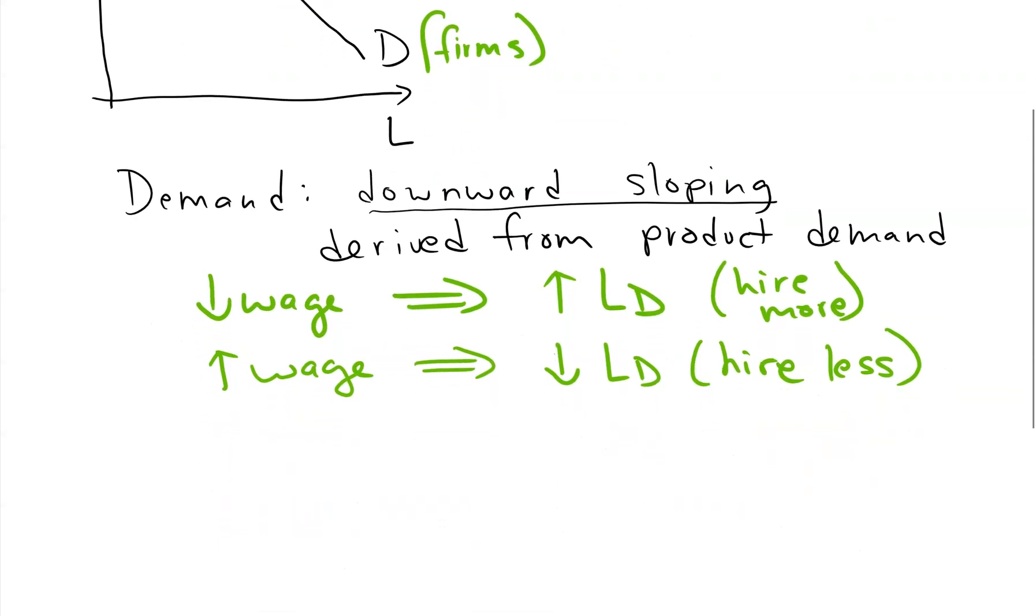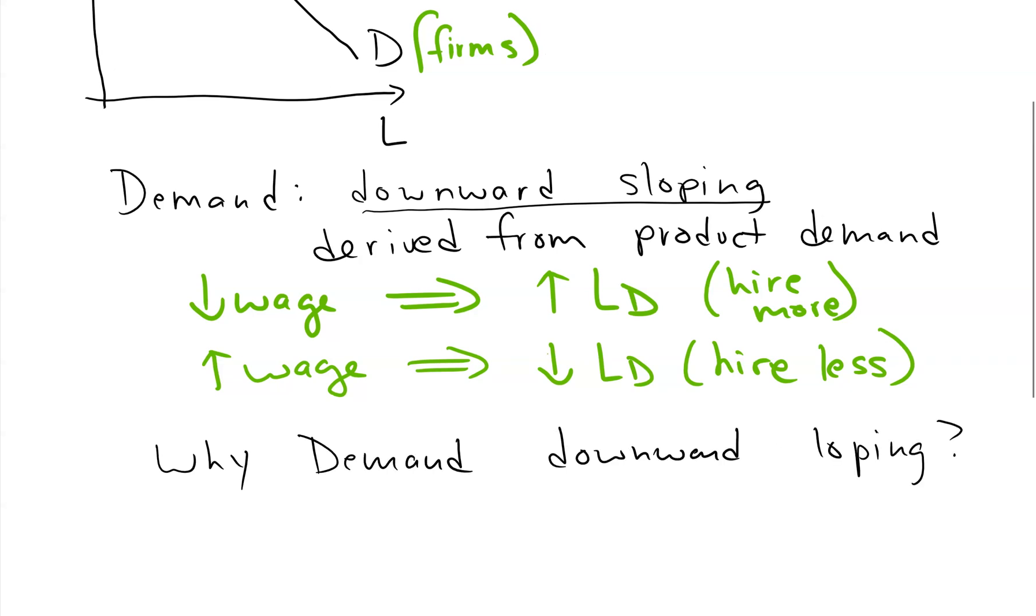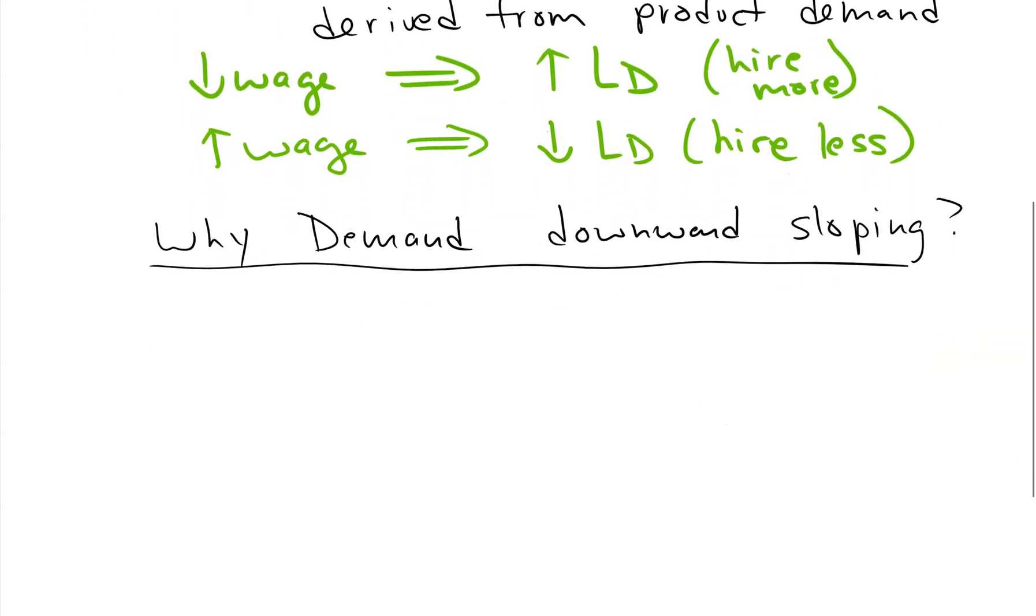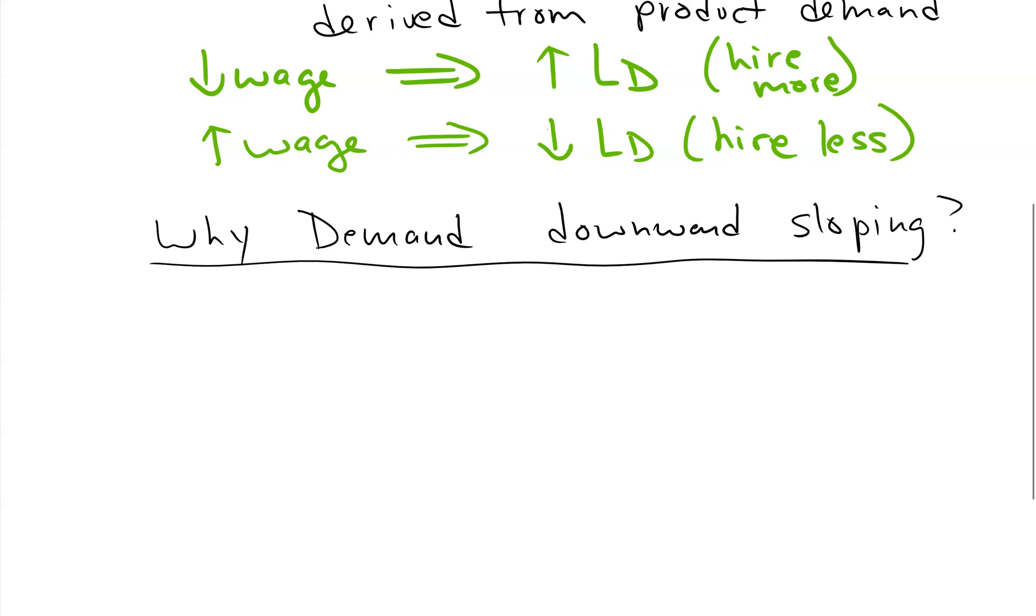So the question we need to ask ourselves in this video is why is demand downward sloping? And there's actually three reasons. As you'll find out throughout the course, things that seem quite simple to lots of people, when economists look at them, their explanations actually can be kind of complex. So I'll try my best to make these complex explanations understandable.